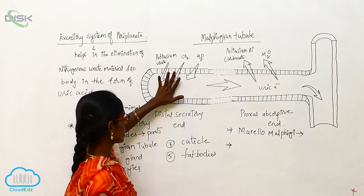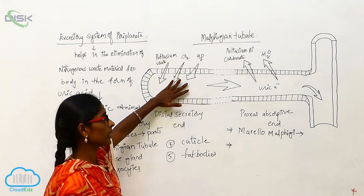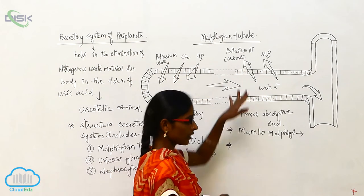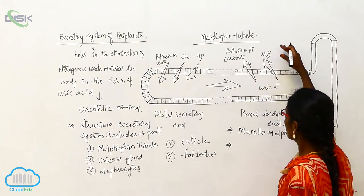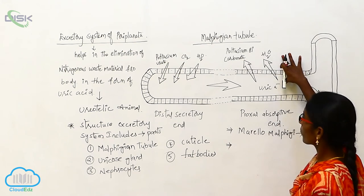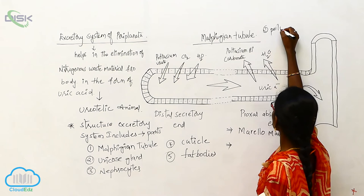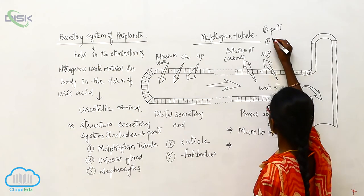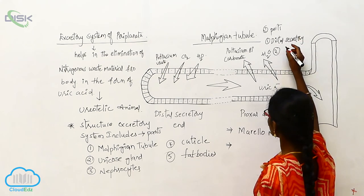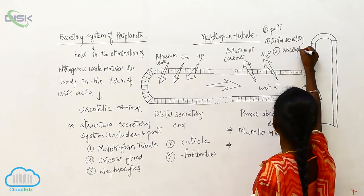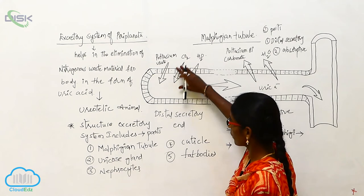In the Malpighian tubules, potassium, uric acid, carbon dioxide, and water are absorbed by the body parts. After complete digestion, potassium bicarbonate and water are eliminated from the body. The Malpighian tubule has two parts: the distal secretory end and the proximal absorptive end.